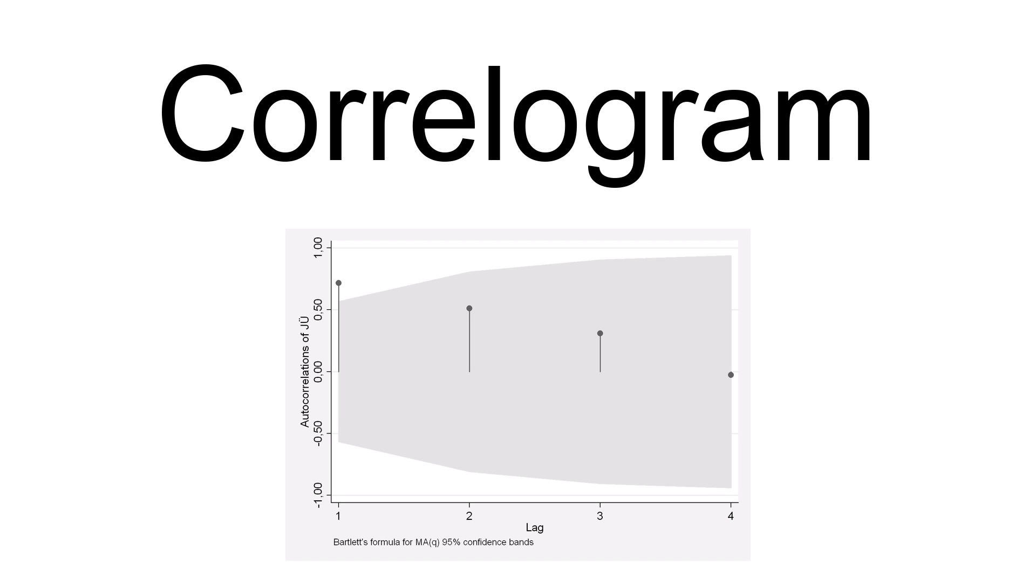Autocorrelations should be near zero for randomness. If the analyst does not check for randomness, then the validity of many of the statistical conclusions becomes suspect. The correlogram is an excellent way of checking for such randomness.